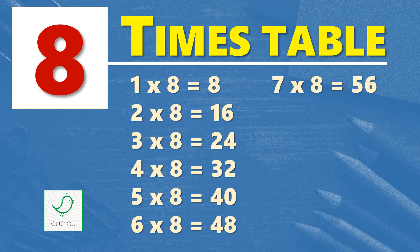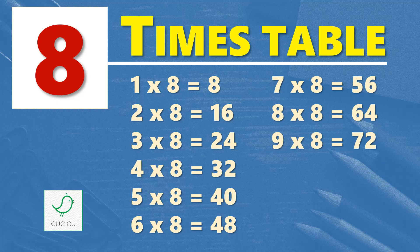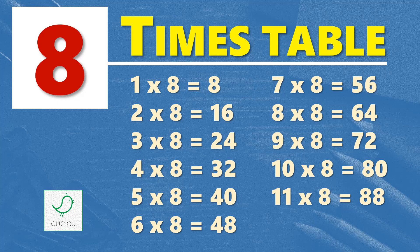7 times 8 is 56, 8 times 8 is 64, 9 times 8 is 72, 10 times 8 is 80, 11 times 8 is 88, 12 times 8 is 96.